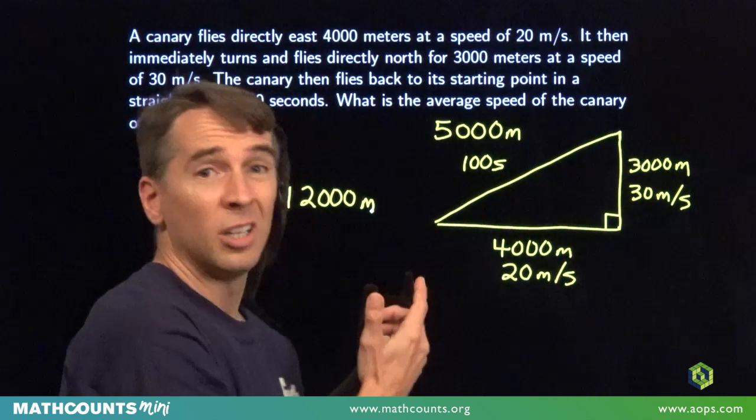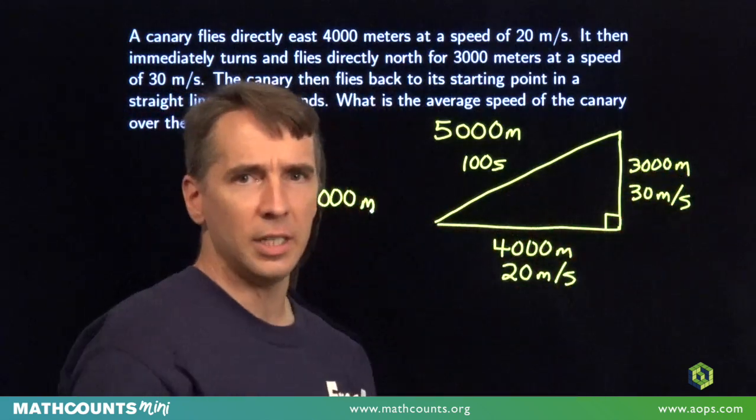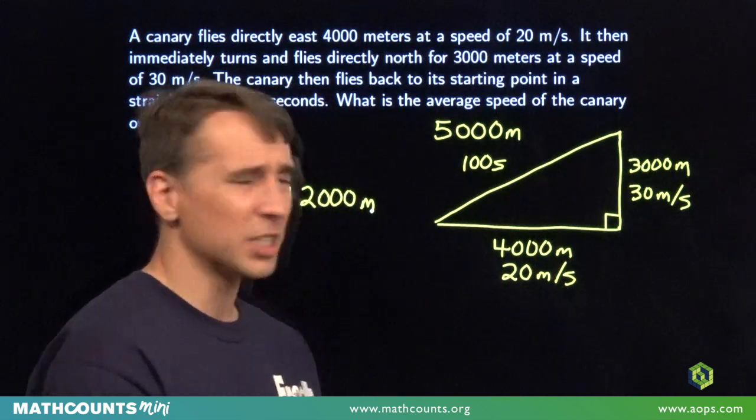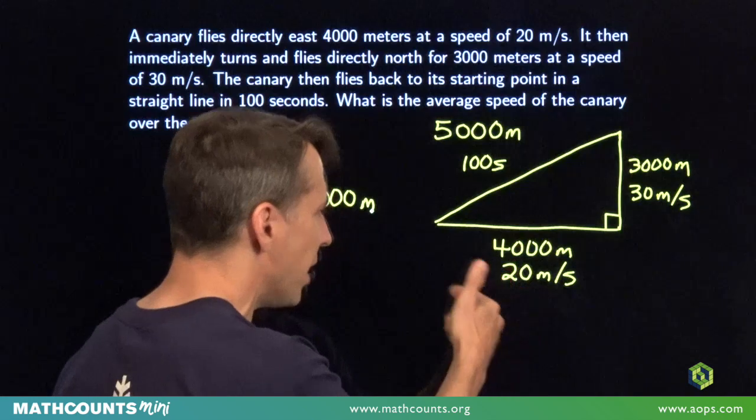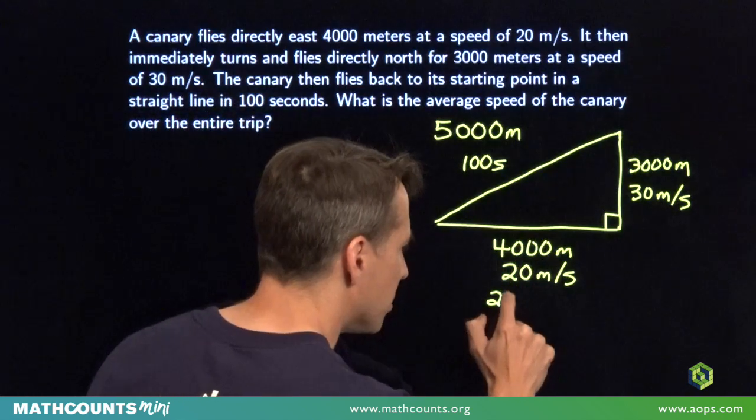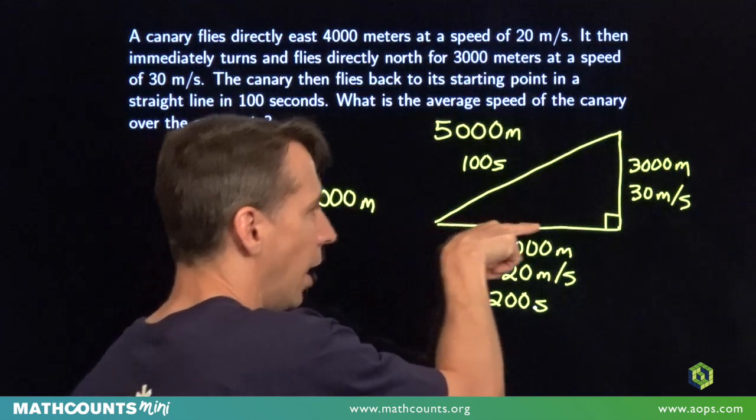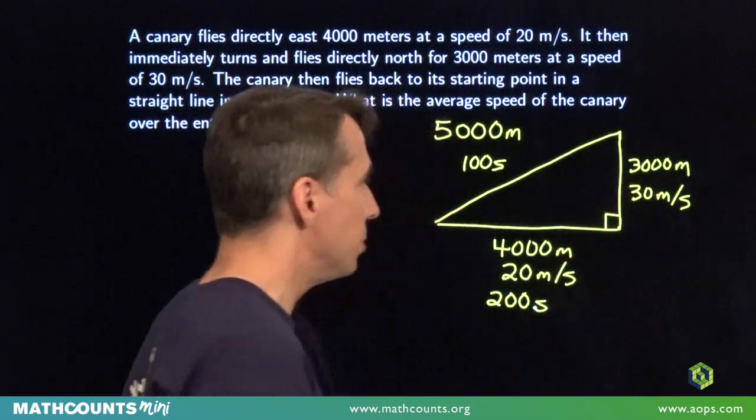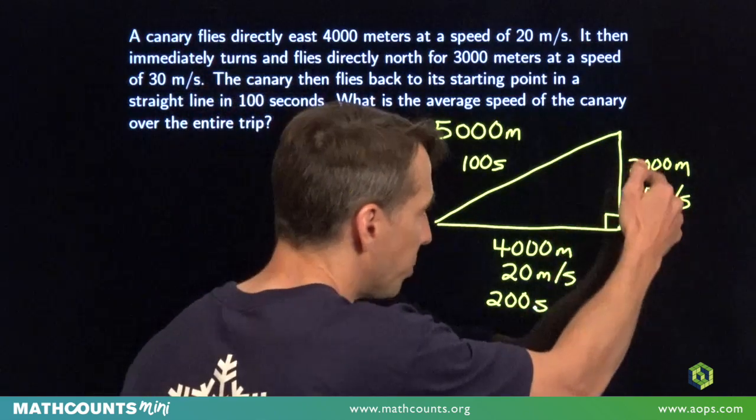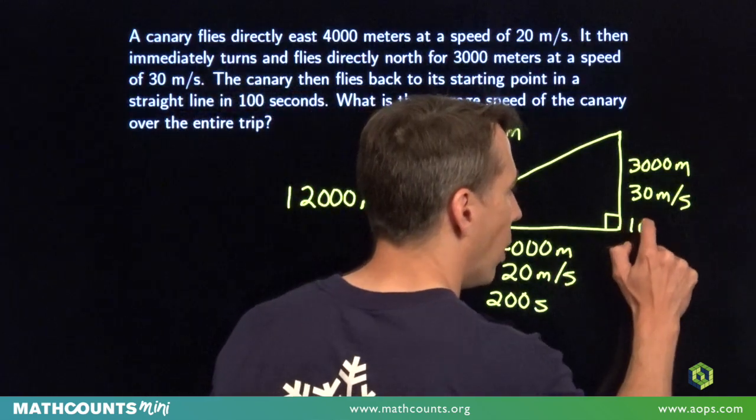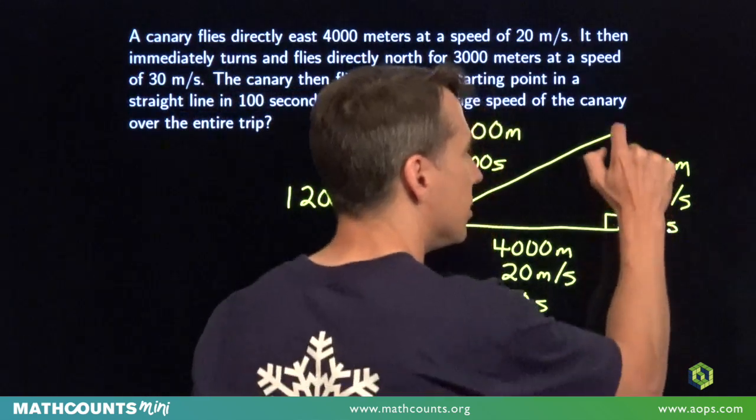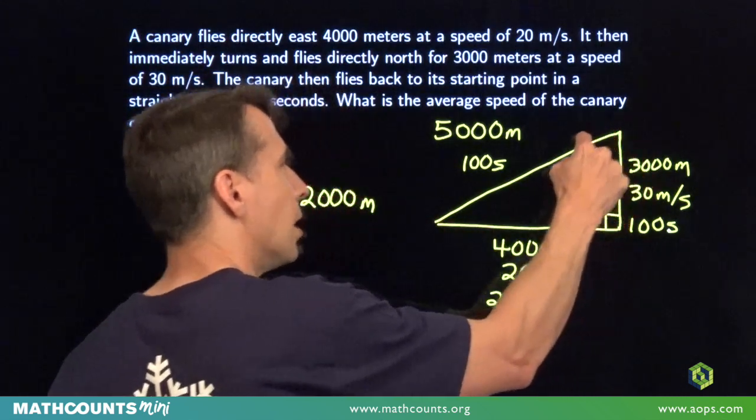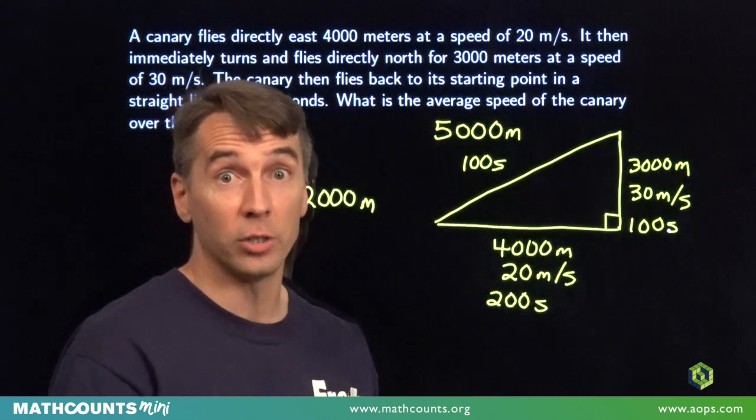But how long does it take the canary to make this whole trip? Well, along the hypotenuse, that's 100 seconds, but we need to figure out how long each of these take. This one's 4,000 meters at 20 meters per second. That means 4,000 divided by 20. That means the canary spent 200 seconds flying along this leg, flying east, and then turns north. Flies 3,000 meters at 30 meters per second. Divide 3,000 by 30. Took the canary 100 seconds to go up this leg. So the total flight took 200 seconds plus 100 seconds plus another 100 seconds. That's 400 seconds total.